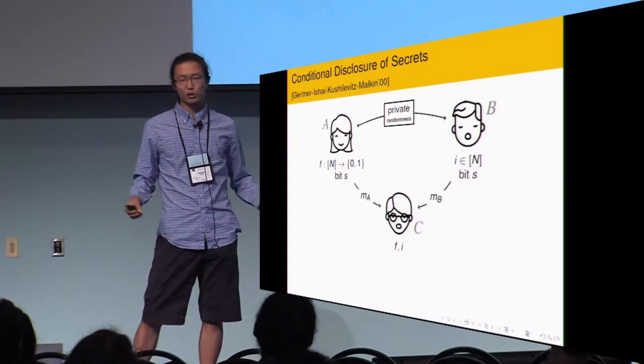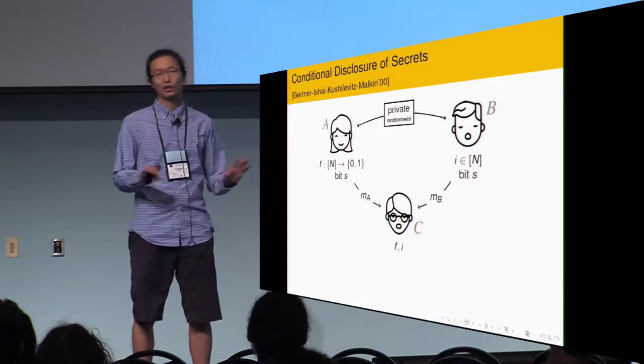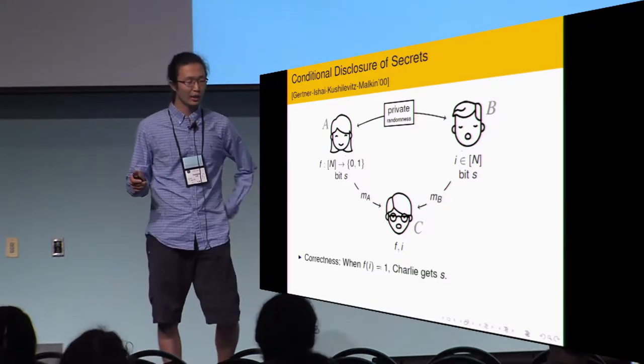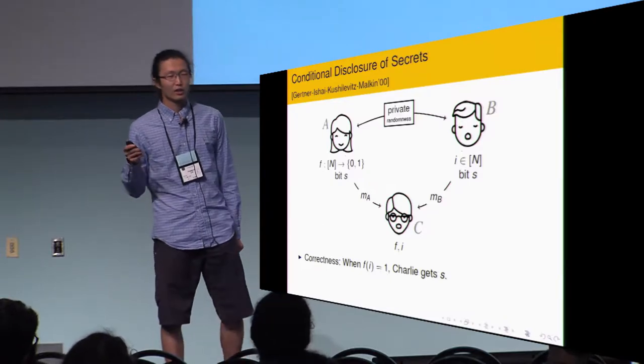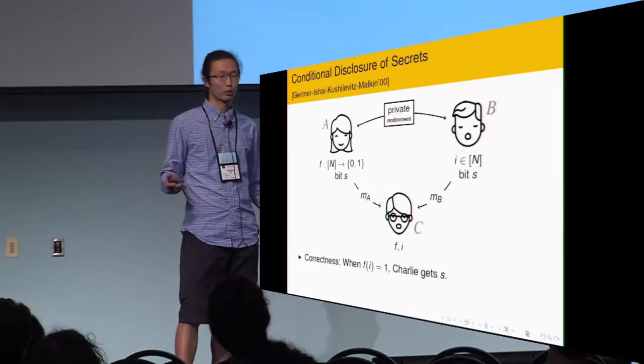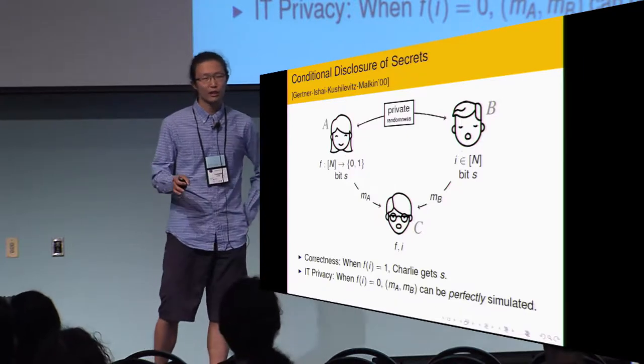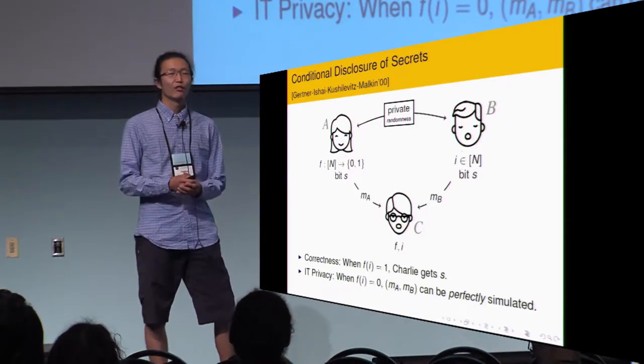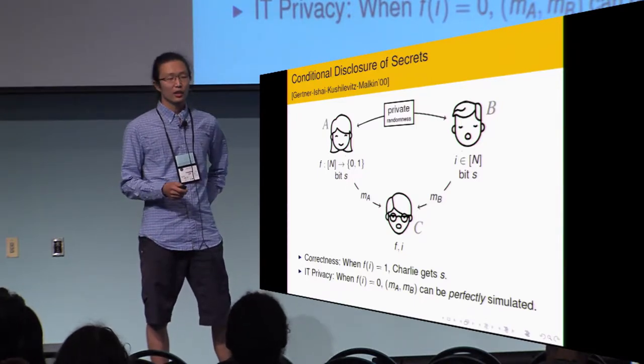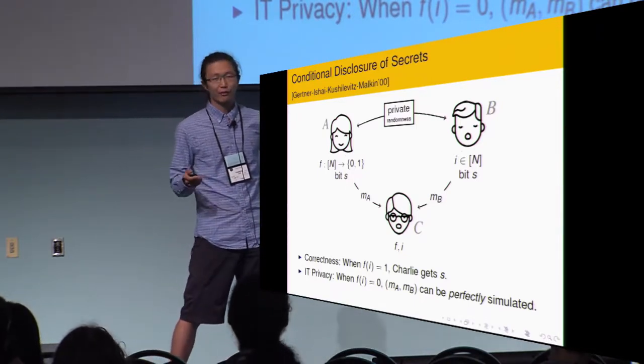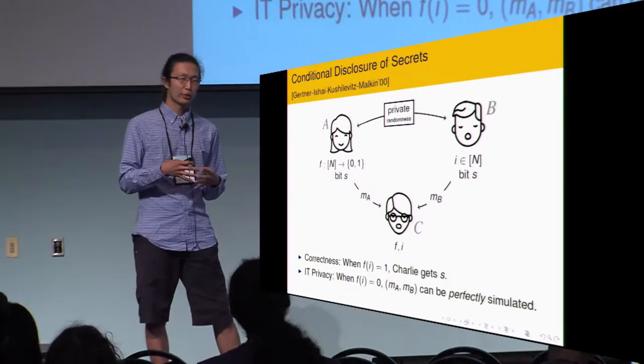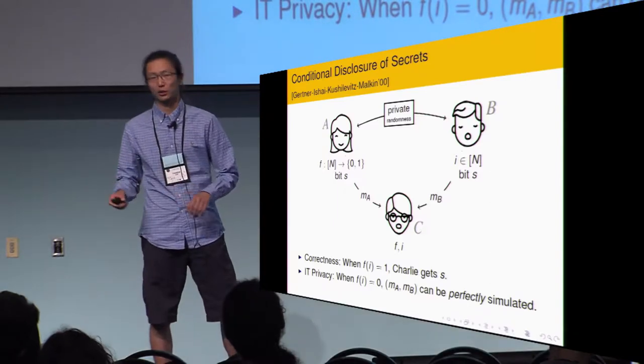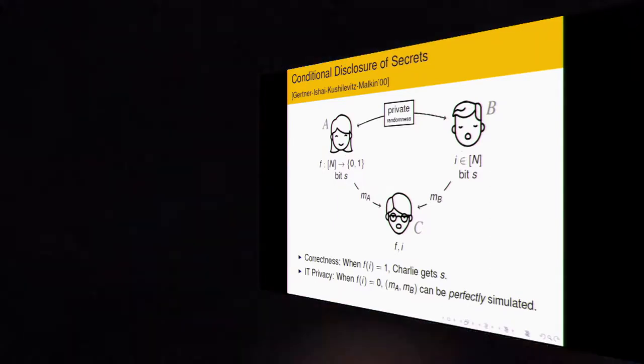This random tape is private in the sense that Charlie cannot read it. Alice and Bob also each send a message to Charlie. They cannot receive any message from Charlie. After this, Charlie should be able to learn a secret if f(i) equals one. For privacy, when f(i) equals zero, Charlie should learn nothing about the secret. We are aiming for information theoretical security.